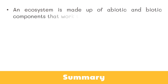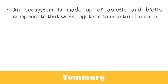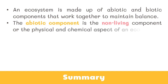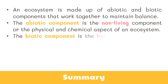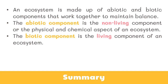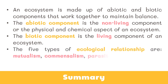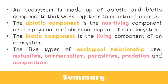To summarize: an ecosystem is made up of abiotic and biotic components that work together to maintain balance. The abiotic component is the non-living, physical and chemical aspect, while the biotic component includes all living organisms dependent on each other. The five types of ecological relationships are mutualism, commensalism, parasitism, predation, and competition.